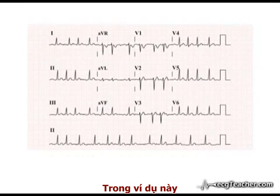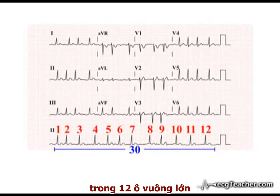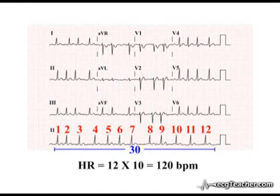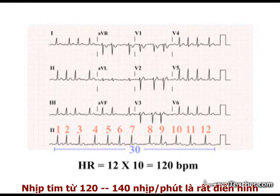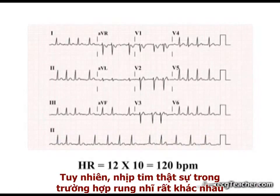In this example, with 12 R-waves in 30 large squares, the heart rate is 120 beats per minute. Rates between 120 and 140 beats per minute are typical; however, the actual heart rate observed in cases of atrial fibrillation is highly variable.